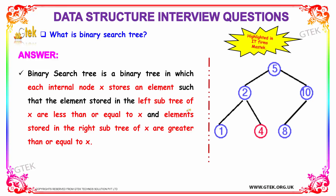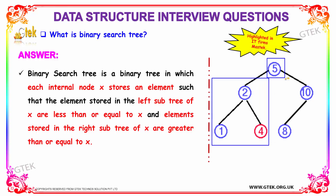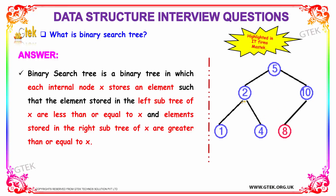The next question is: what is a binary search tree? A binary search tree is a binary tree in which each internal node x stores an element such that the elements stored in the left subtree are less than or equal to x. Here, if x is 5, then 1, 2, and 4 on the left are less than 5. The elements in the right subtree are greater than or equal to x — here 10 and 8 are greater than 5. This is known as a binary search tree, which enables faster searching. These kinds of questions are highlighted in IT firms such as MassTech.